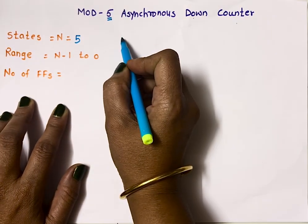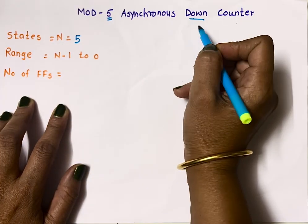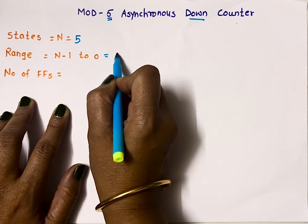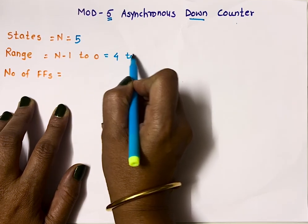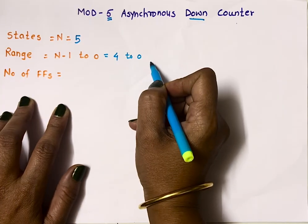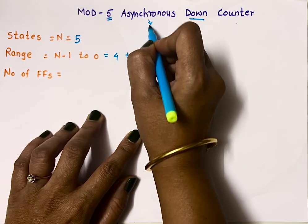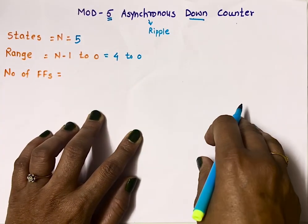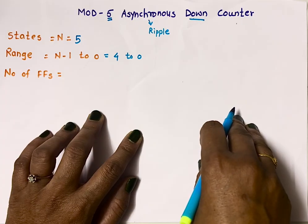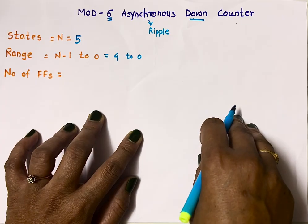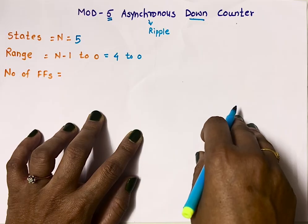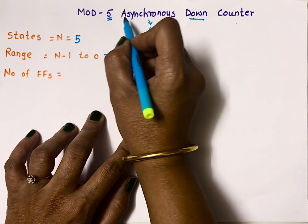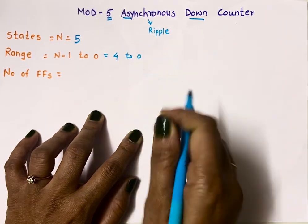The range of this counter — since it is a down counter — it will count in the downward direction, so the range is N minus 1 to 0, that is 4 to 0. It will count from 4 to 0. This is an asynchronous counter, also called a ripple counter. In an asynchronous counter, the external clock is given to only one flip-flop, and the output of the first flip-flop acts as the clock input to the second flip-flop, so they are not all synchronized with each other — that is why it is called an asynchronous counter.